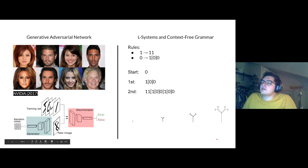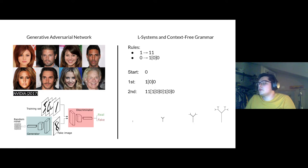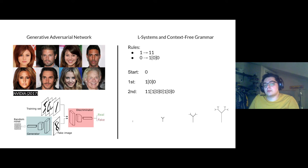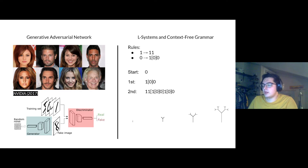Looking at the technologies behind this research: Generative Adversarial Networks. GANs are composed of two things — a generator and a discriminator. A generator generates a fake image, which is passed to a discriminator, which takes the fake image and the training data and determines whether the fake image is real or fake. That feedback goes to the generator to produce more images like the training set. In the example shown, the training set was celebrity faces, and the GAN generated very similar celebrity faces — all fake people.